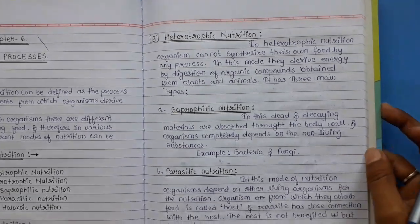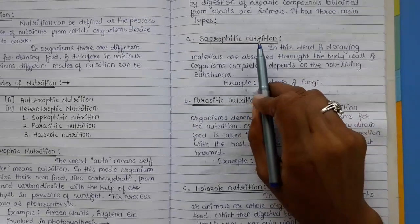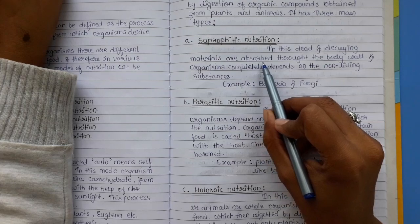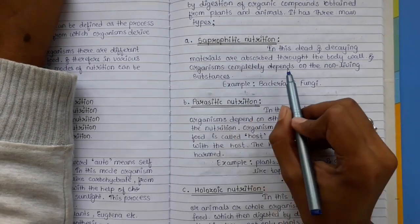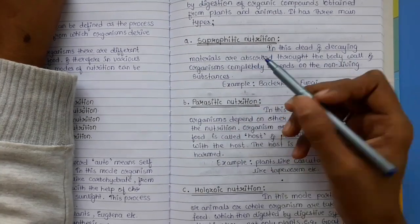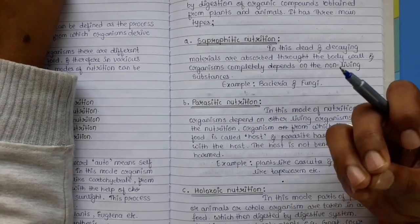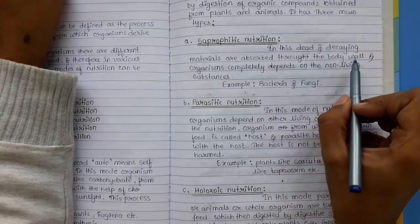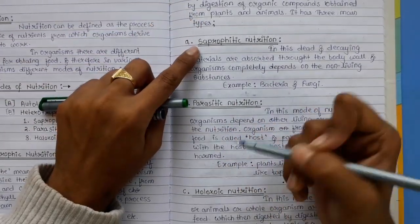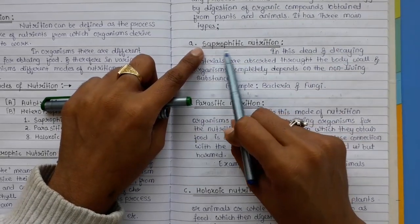The first type is saprophytic nutrition. In this mode, dead and decaying material is absorbed through the body wall and the organism completely depends on non-living substances. When something depends on dead and decaying substances, it comes under saprophytic nutrition.